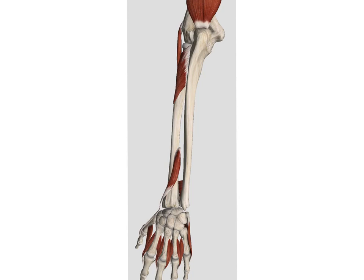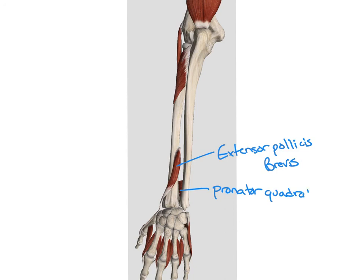The final layer of muscle that we can see is our extensor pollicis brevis. On the anterior side, we can see our pronator quadratus. At the top, we can see our supinator muscle.